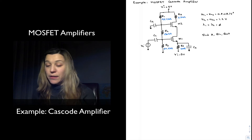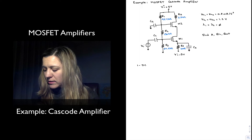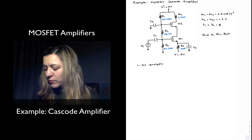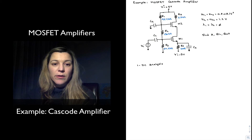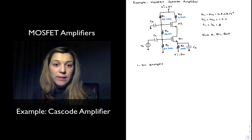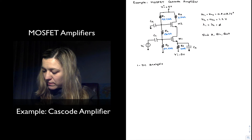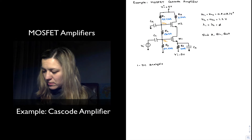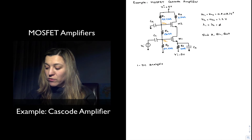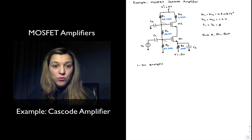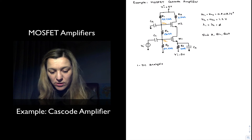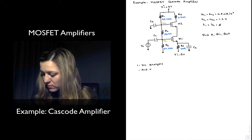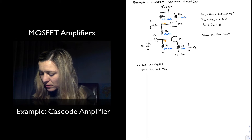We're going to start by identifying the cascode amplifier, but then we're going to perform a DC analysis to find out the bias point. Specifically we want to know the value of the drain current, because it's going to allow us to calculate the transconductances GMs, which in turn will allow us to calculate the gain. I'm going to start calculating Vg1 and Vg2 through voltage division between V+ and ground. Notice that R3 is not connected to the negative supply but rather to ground.